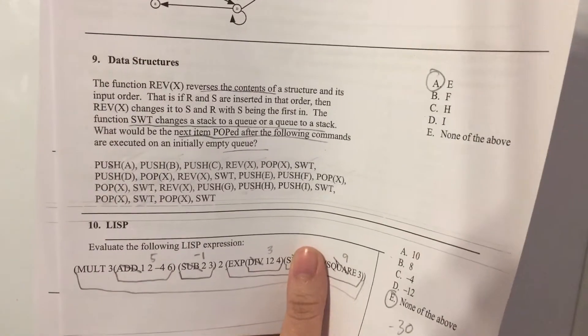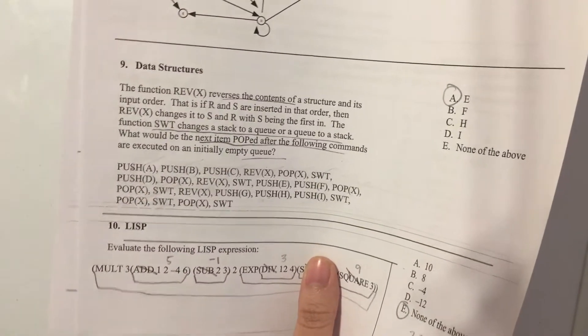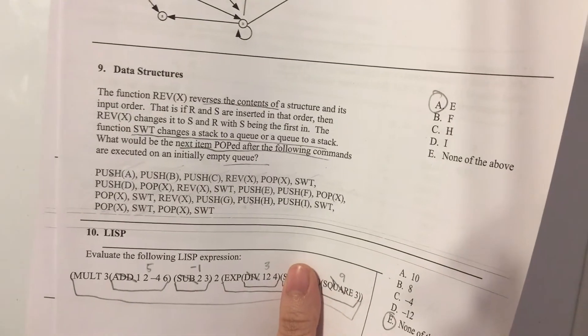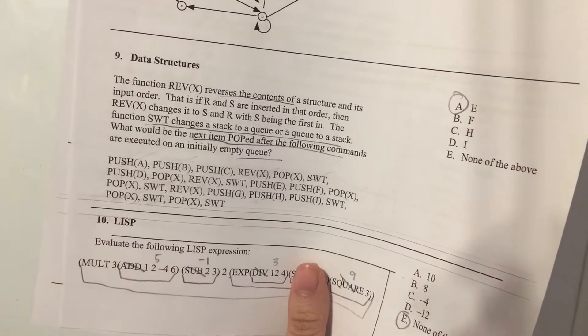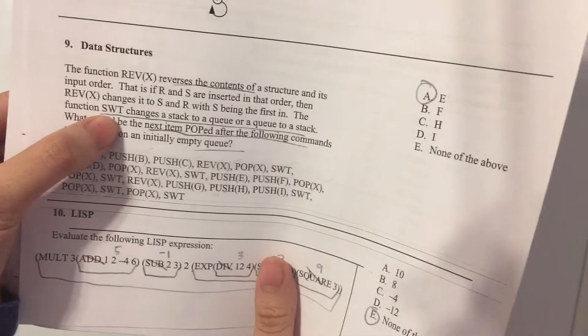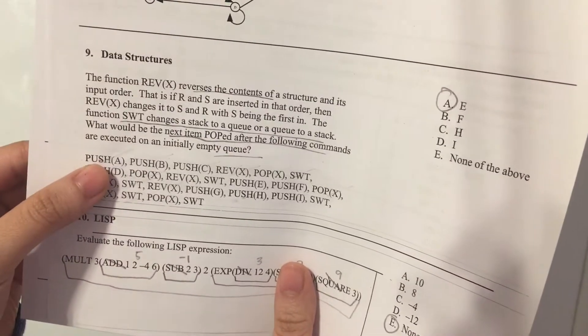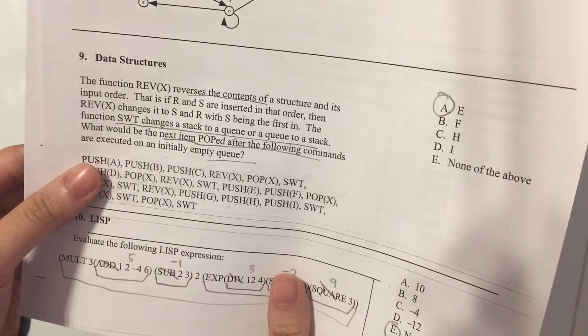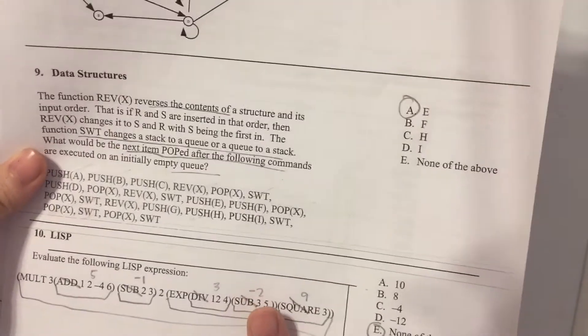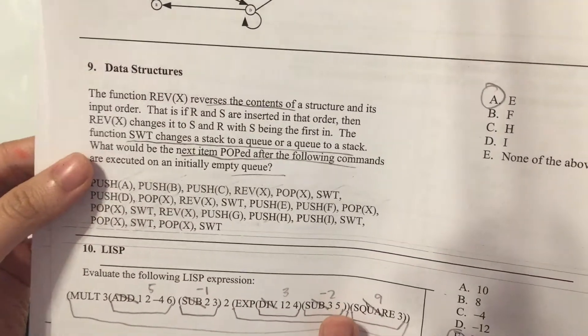This question tells us that there's a function called reverse that reverses the contents of a structure and its input order. Then there's another function called switch, and it changes a stack to a queue or a queue to a stack, and it's asking us what the next item to be popped will be.